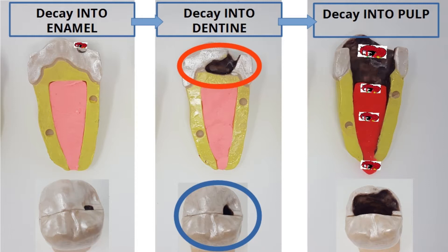This is important because tooth decay on the outside of the tooth might look small, but there is a lot of decay inside the tooth. So it is important to get the tooth decay treated by a dentist quickly, to stop the tooth decay spreading.